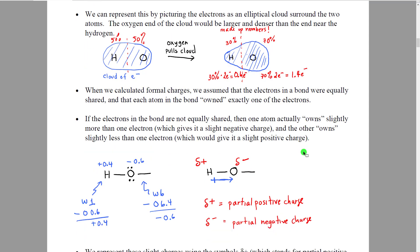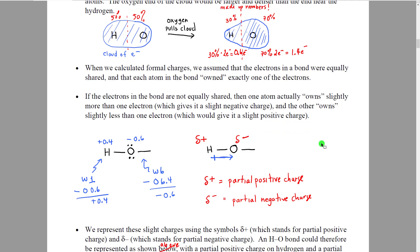The importance of this comes when we look at what it does to formal charges. When we calculated formal charges, we assumed — just as Lewis did — that the electrons in a bond were perfectly equally shared, so each atom would own exactly one electron for that bond. However, if the electrons are not equally shared, the amount an atom owns from that bond changes. If it's the more electronegative atom, it will own slightly more than one electron, giving it a slight negative charge, while the other atom owns slightly less than one electron, giving it a slight positive charge.